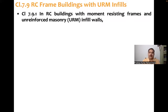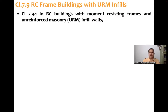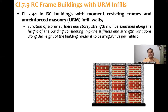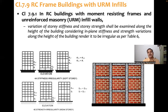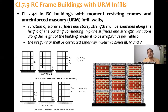Clause 7.9.1 states that in RC buildings with moment-resisting frames and unreinforced masonry infill walls, variation of story stiffness and story strength shall be examined along the height of the building. In-plane stiffness and strength variations along the height render the building irregular as per Table 7. If the stiffness of any story is less than the story above, it is a soft story; if strength is less, it is a weak story. These irregularities shall be corrected in seismic zones 3, 4, and 5.